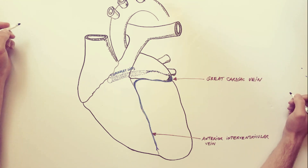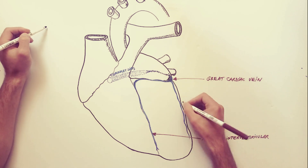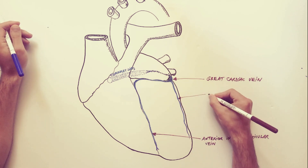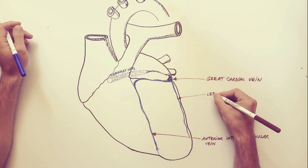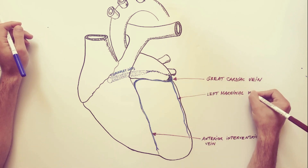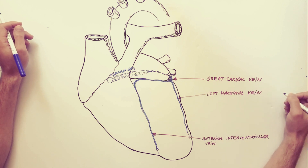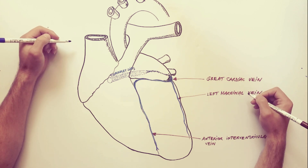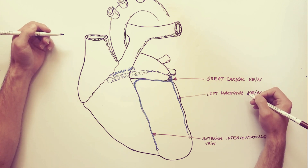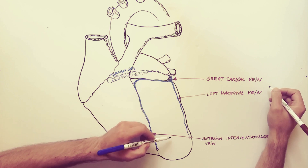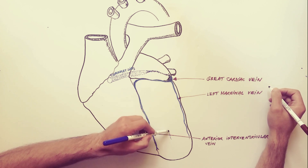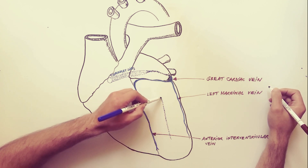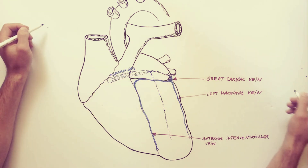A vein that drains directly into the great cardiac vein is the left marginal vein. The posterior vein of the left ventricle runs upward on the posterior surface of the ventricle and opens typically into the coronary sinus.